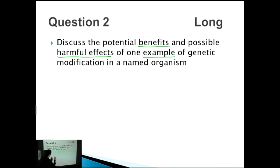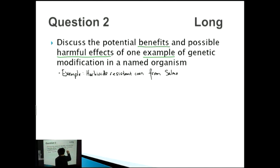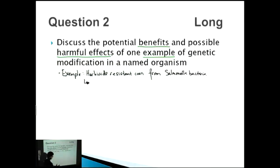The example they love using is the use of herbicide-resistant genes from Salmonella bacteria, which are placed into corn so the corn becomes resistant to herbicide. So our named example is herbicide-resistant corn from Salmonella bacteria. This means you can use herbicides on these crops and they won't kill the crops themselves — they'll kill the weeds around them, resulting in herbicide-resistant crops.